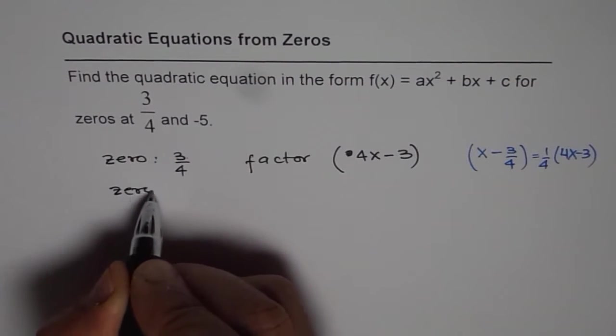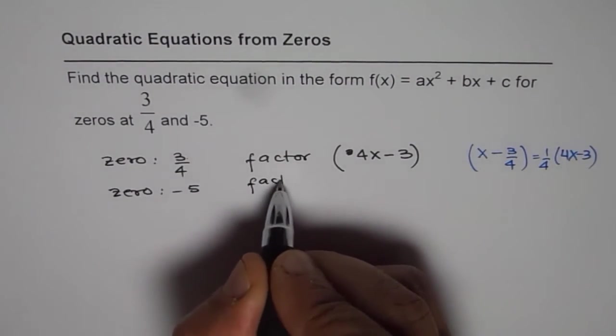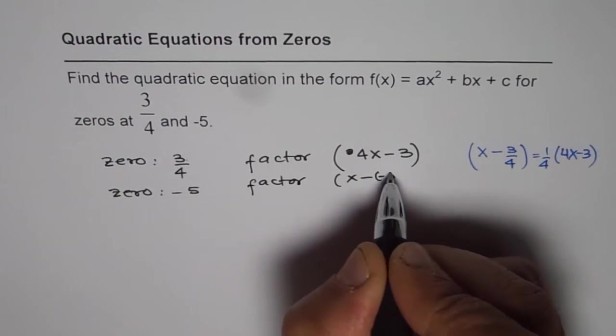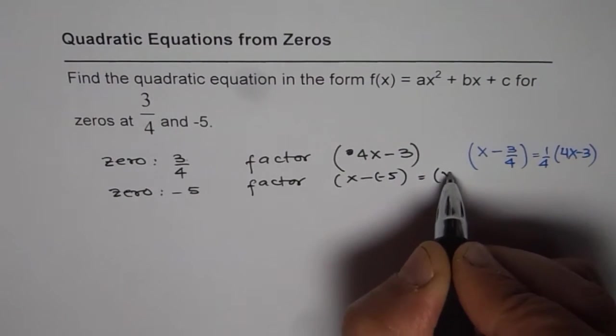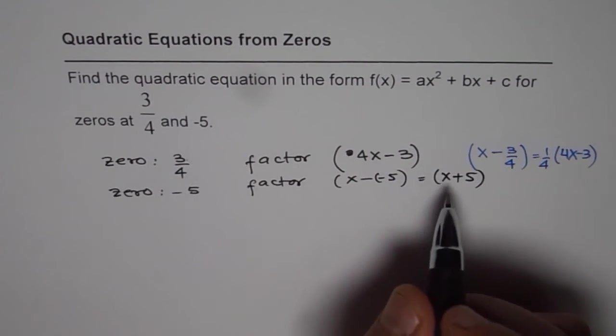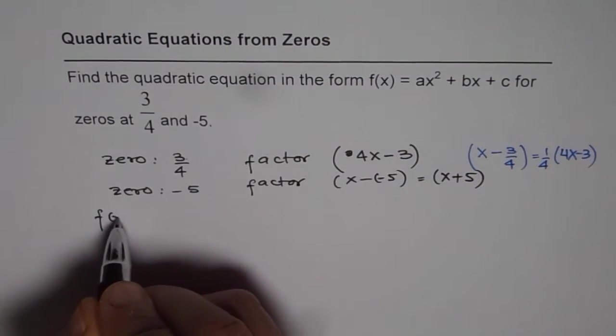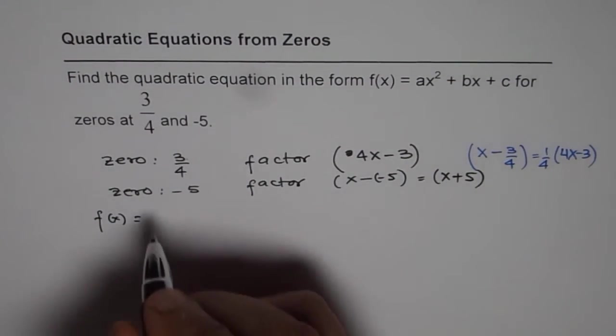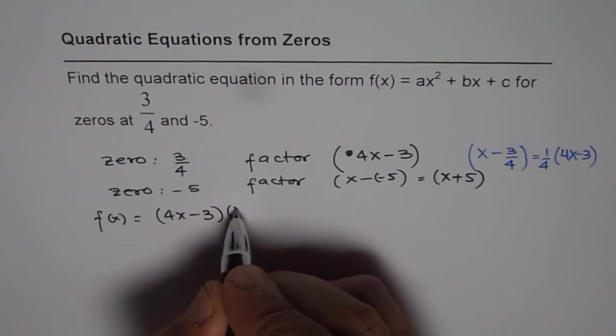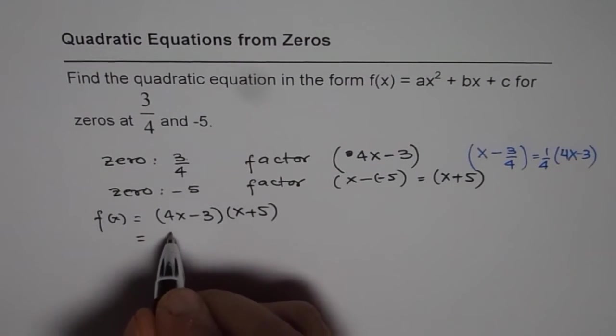The other zero we have is at -5, and therefore the factor is x - (-5), which is indeed x + 5. So these are the two factors. The quadratic function should be the product of these two. So we get (4x - 3)(x + 5). That should give us the quadratic function. So let's multiply now.